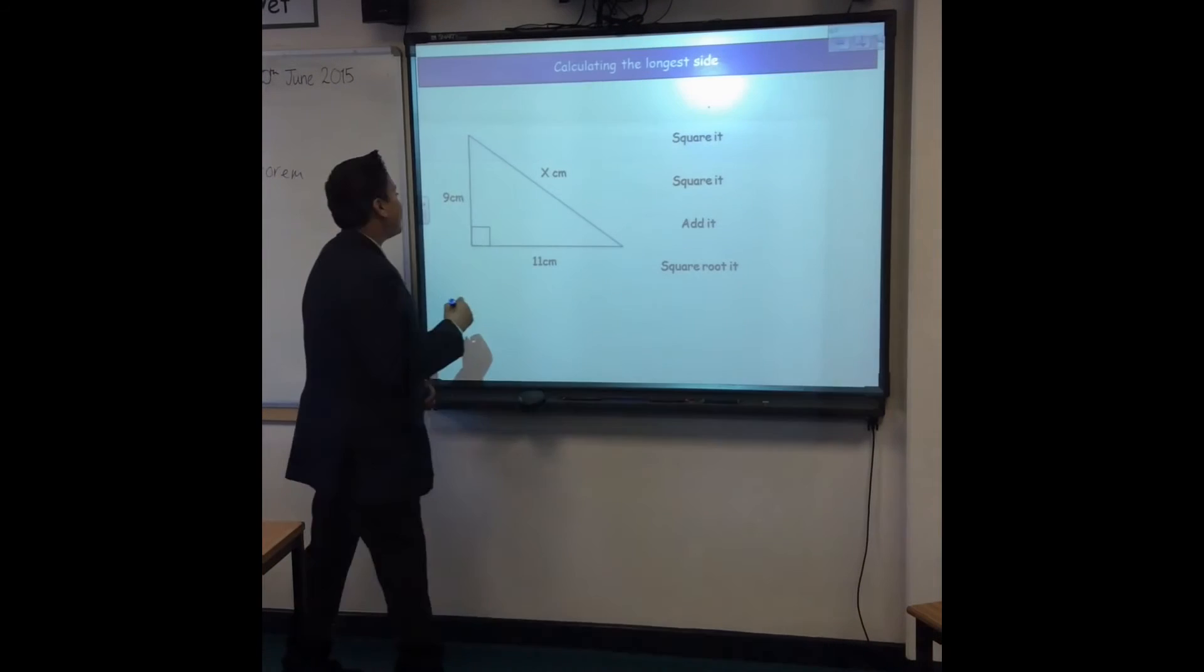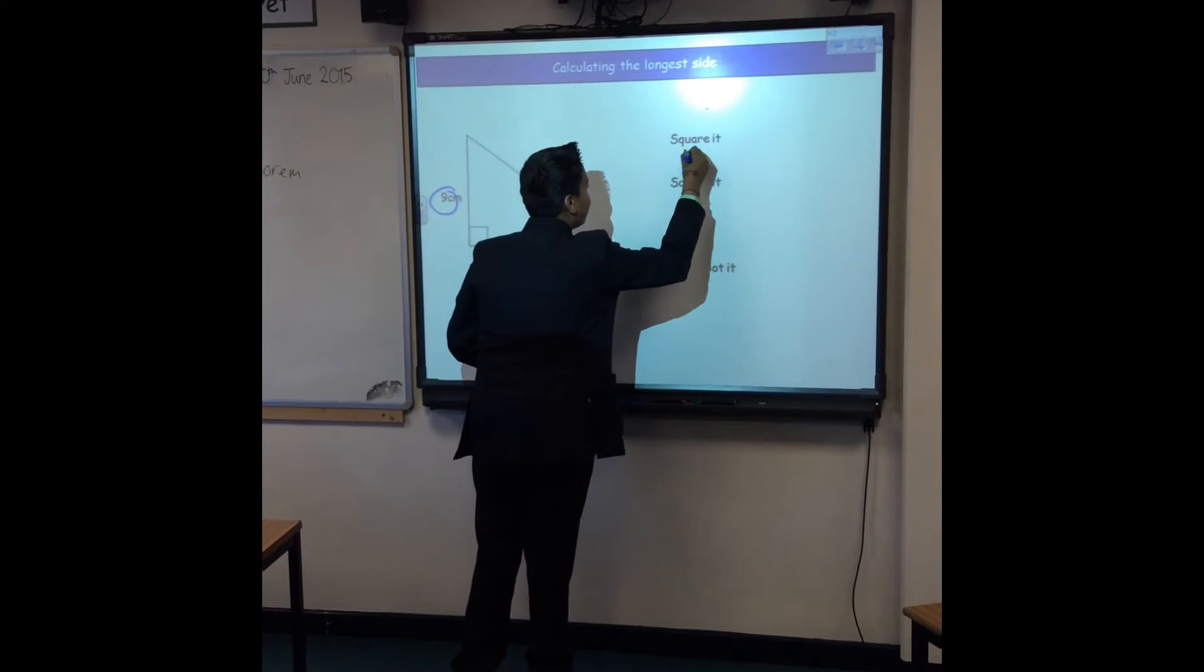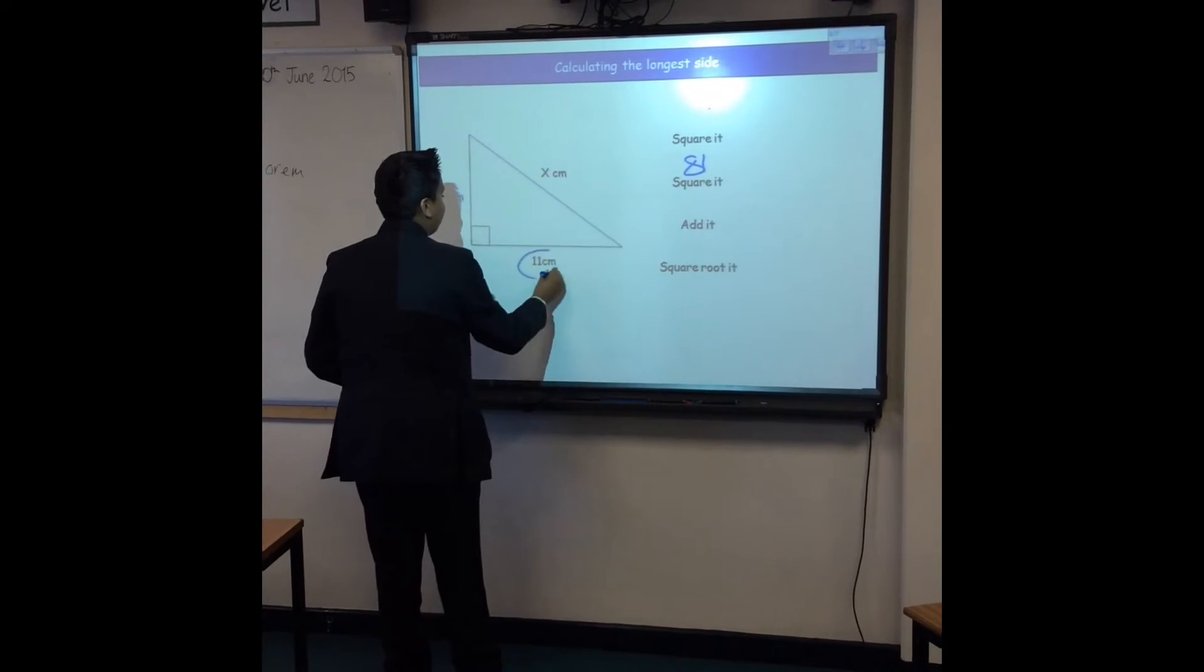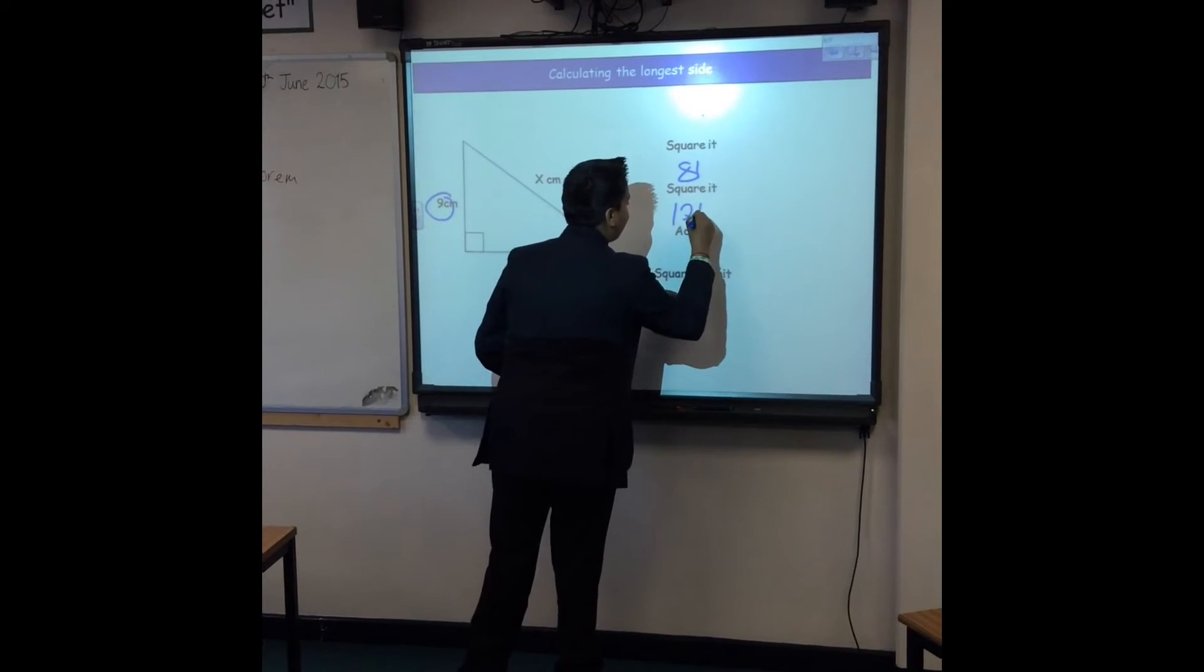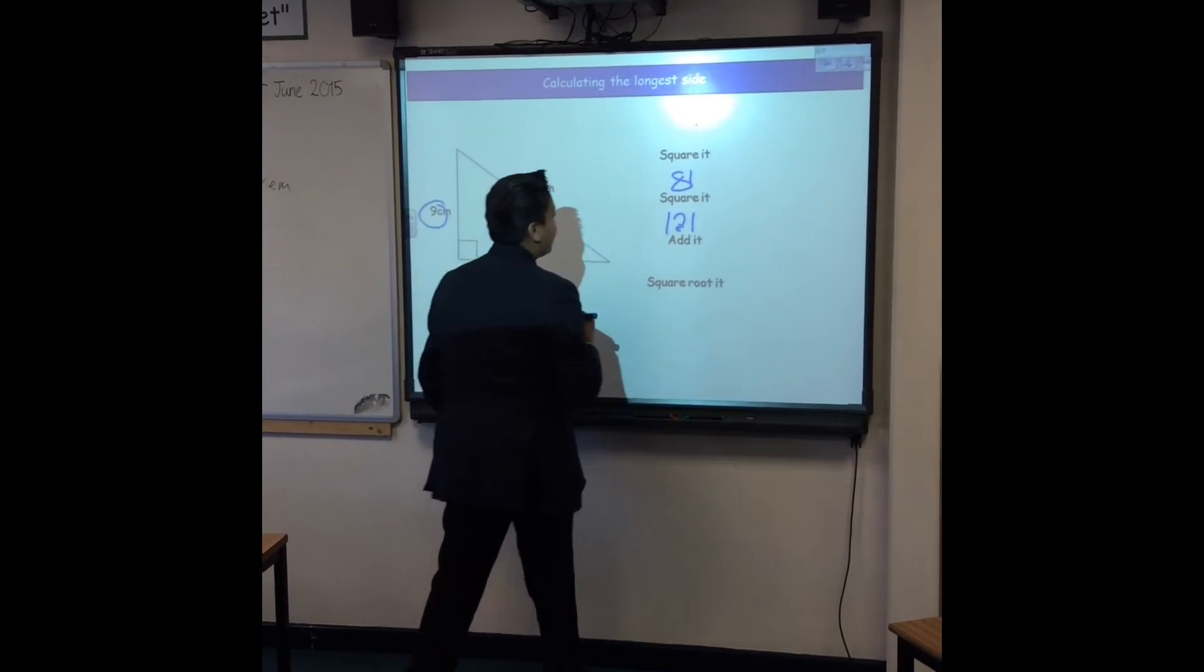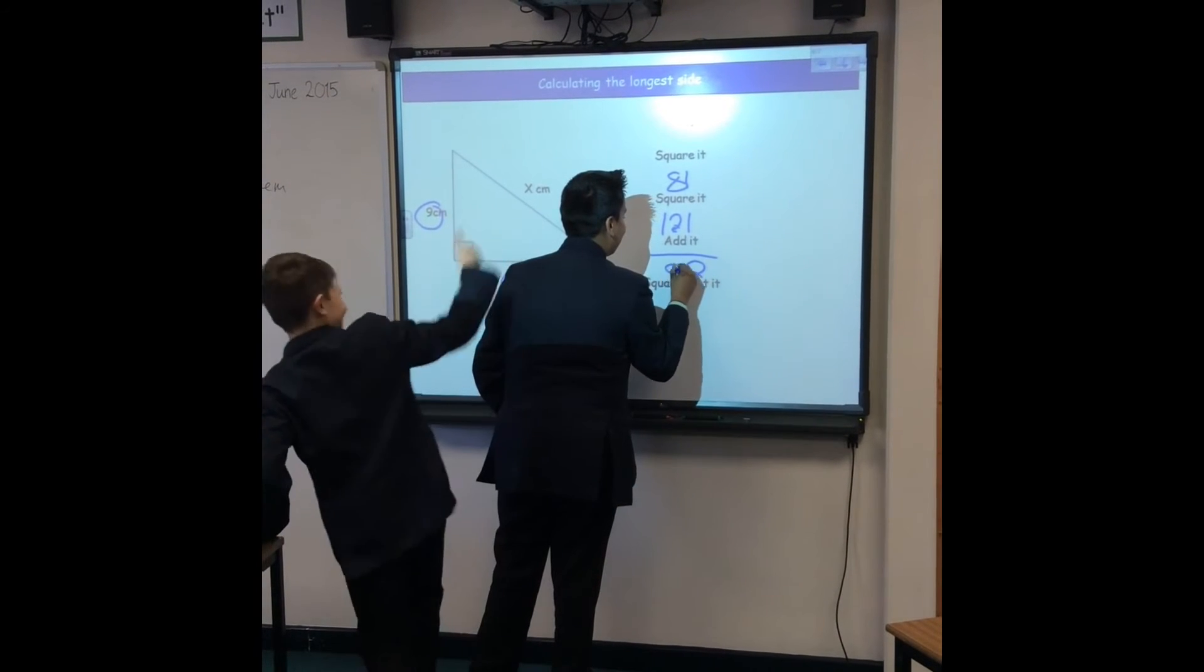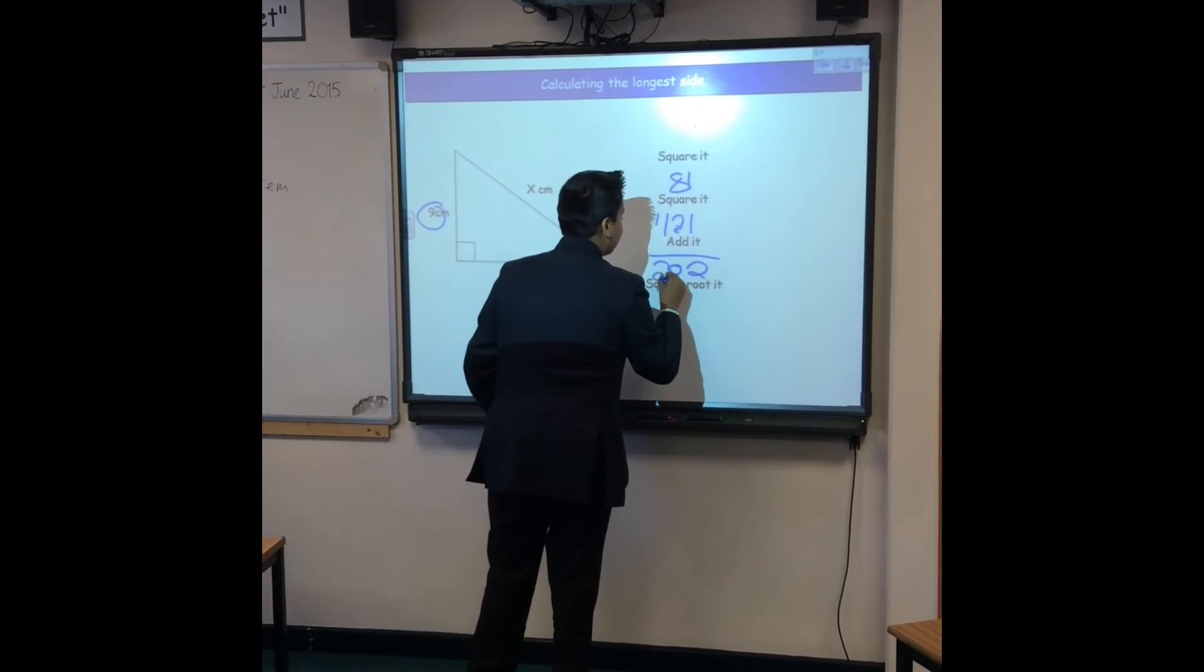I'm going to square 9. Then I'm going to square 11, so that equals 121. So you've got to add that. That equals 202.